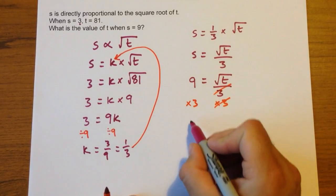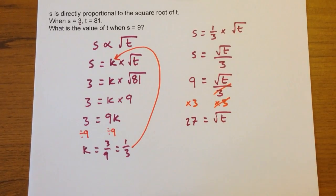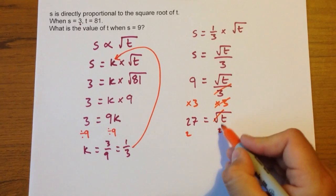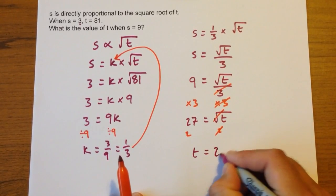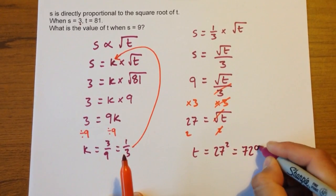And we've now got 3 nines, or 27, equals the square root of t. Get rid of the square root by squaring both sides. And that leaves us with t equals 27 squared, which is 729.